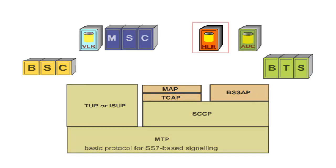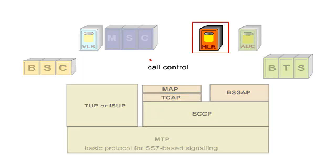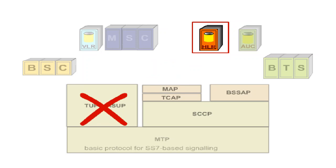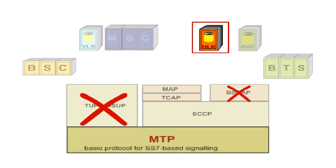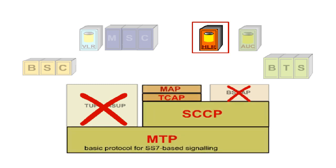The HLR is not responsible for call control and therefore does not need TUP/ISUP. Furthermore, since it doesn't have to communicate directly with the base station controller, BSSAP is not implemented in the HLR. Thus, only the four protocols MTP, SCCP, TCAP and MAP must be present in the HLR.